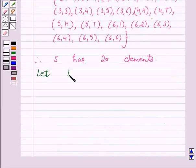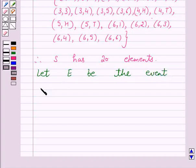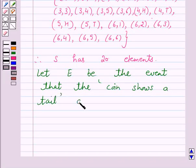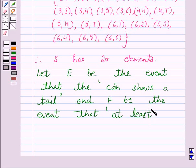So, let E be the event that the coin shows a tail, and F be the event that at least one die shows a 3.